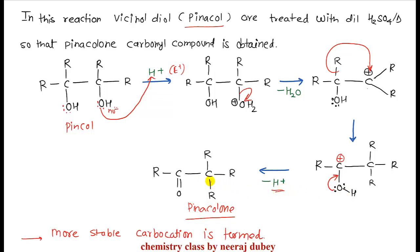Now there are two OH groups available. In the first step, a proton will be attached, which will generate the more stable carbocation. Next, step two and step three follow additionally — the last step is removal of H proton and formation of pinacolone.